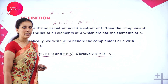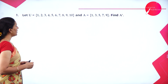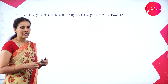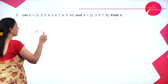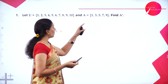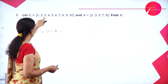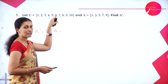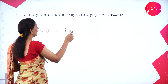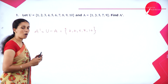Let U equal {1,2,3,4,5,6,7,8,9,10} and A equal {1,3,5,7,9}. Find A dash. A dash equals U minus A — write the elements present in U which are not in A. Except for 1, 3, 5, 7, 9, we write all other elements from the universal set. Removing 1, 3, 5, 7, 9 from U, the remaining elements are 2, 4, 6, 8, 10. So A dash equals {2, 4, 6, 8, 10} — this is the complement of set A.